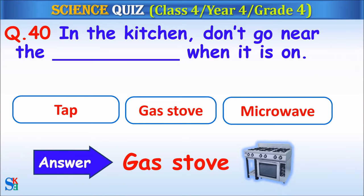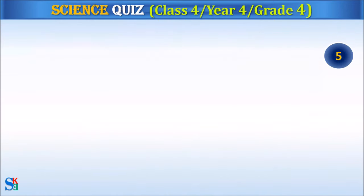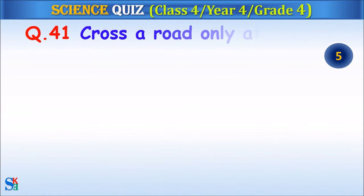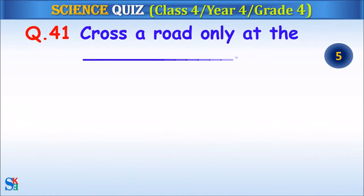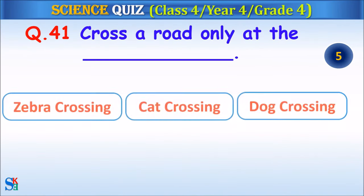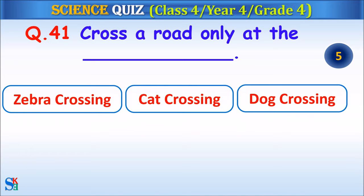Question 41: Cross the road only at the — zebra crossing, cat crossing or dog crossing? Your time starts.